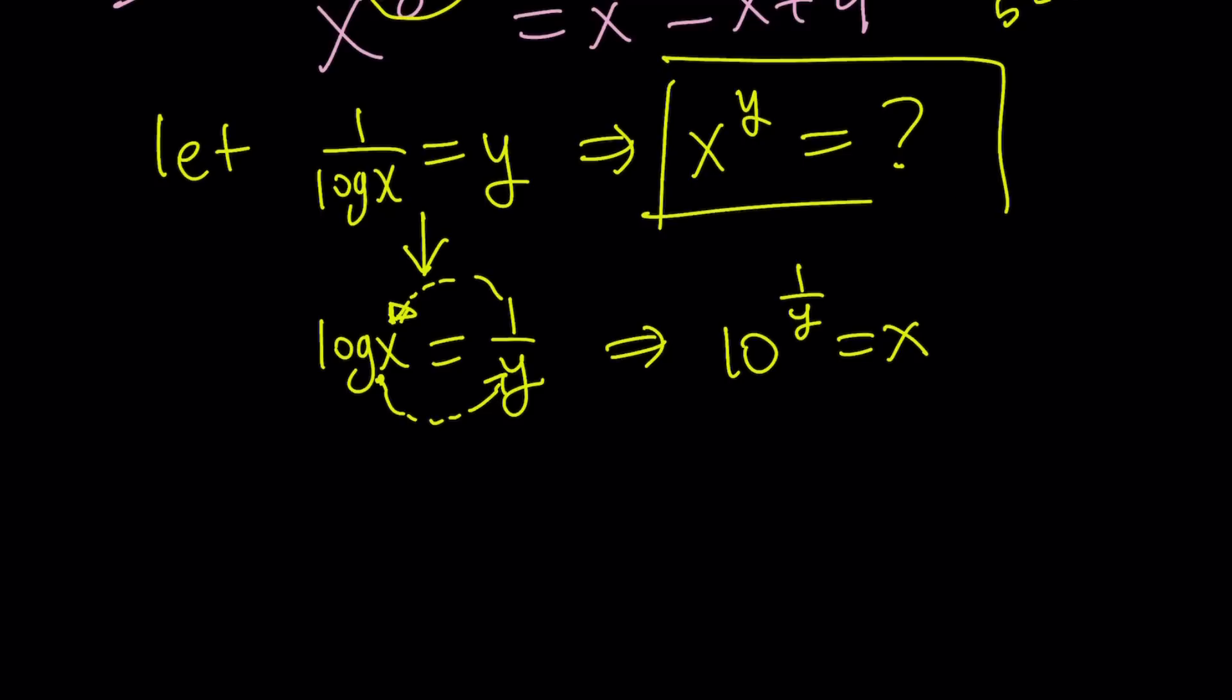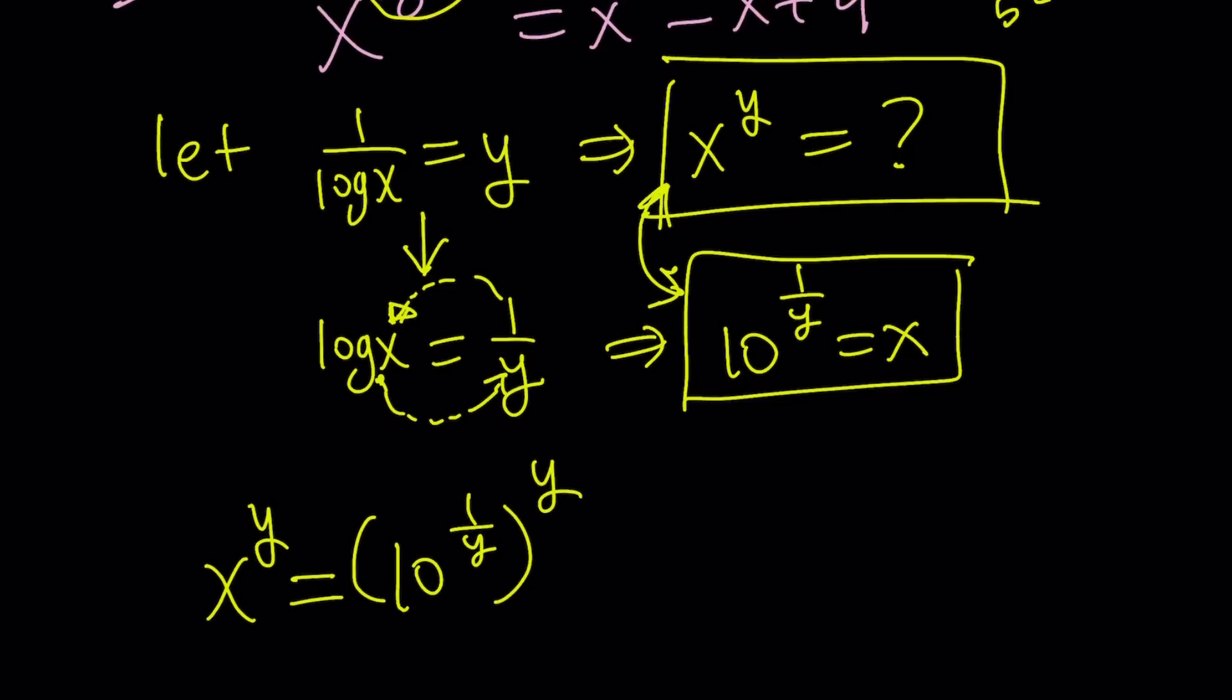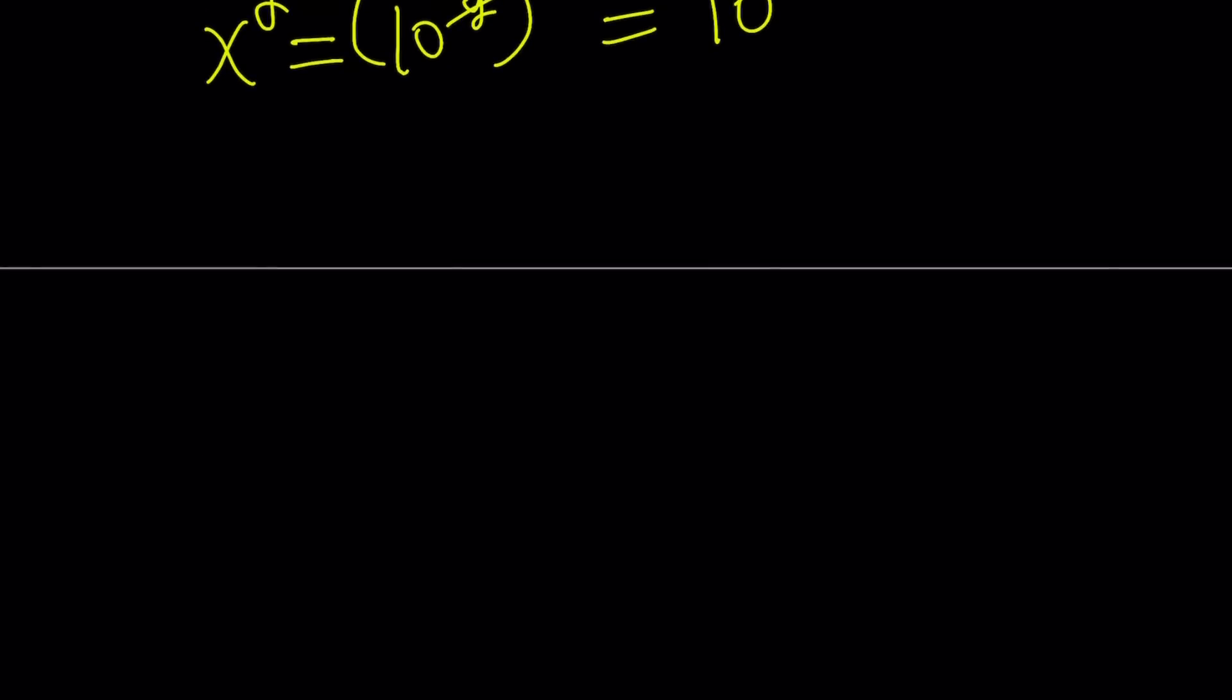Anyways, so, I was able to find x in terms of y. What am I going to do with that? Remember, I was trying to simplify x to the power y, and I have x in terms of y. So, we can go ahead and combine these two equations, replace x with 10 to the power 1 over y in the first equation. So, x to the power y becomes 10 to the power 1 over y to the power y. Hmm, that's interesting. And this becomes, because y cancels out, this becomes 10. Awesome. So, what I was trying to simplify on the left-hand side just turned into a constant number, 10.